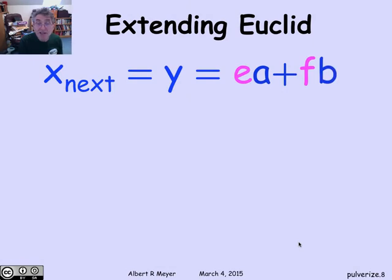Well, how does Euclidean work? Well, remember, at the next step, the value of x is the old value of y. So if I had the old value of y as Ea plus Fb, then I clearly have the next value of x as the same linear combination that y had previously.